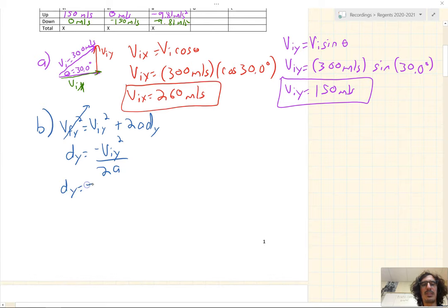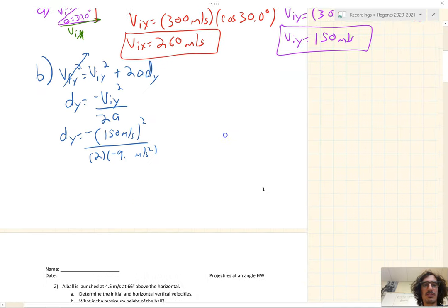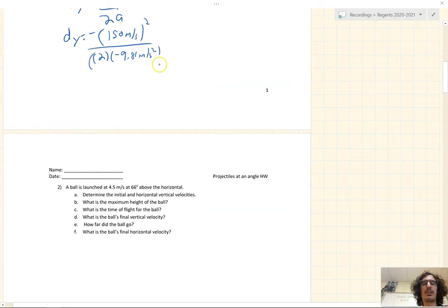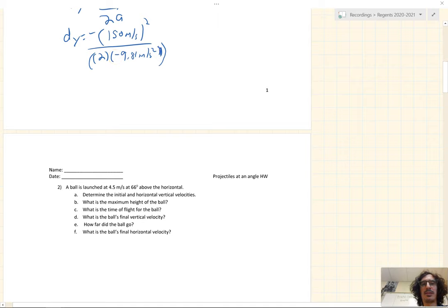Let's subtract VIY squared to the other side and then divide by 2A. That leaves us with D sub Y equals negative VIY squared over 2A. We'll plug in our values. The negative goes on the outside. We use our initial vertical velocity, 150 meters per second squared, all over 2 times negative 9.81 meters per second squared. Plug and chug, and we get a max height to be 1,147 meters.